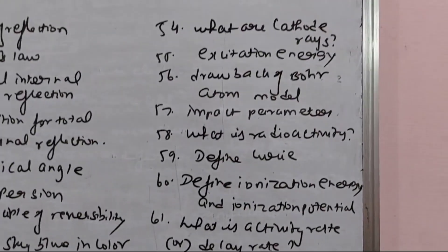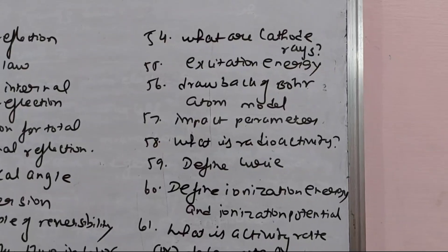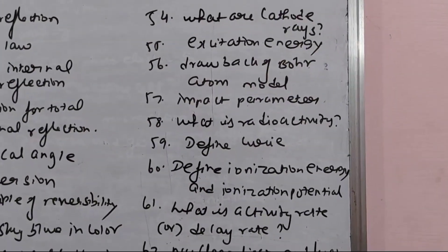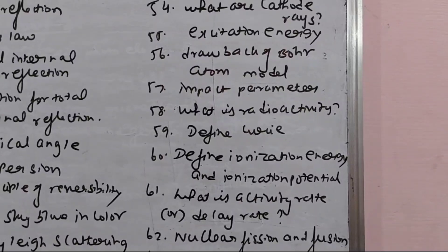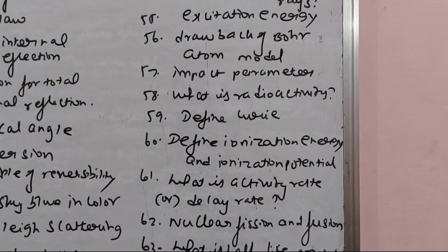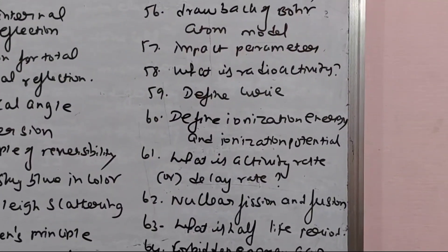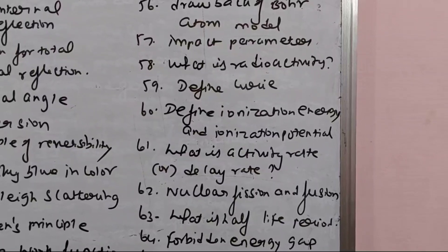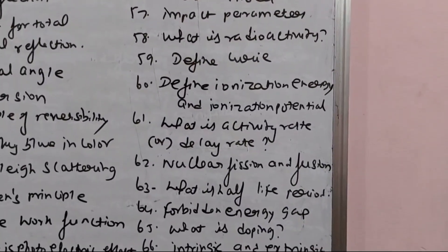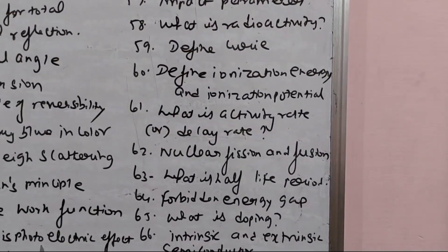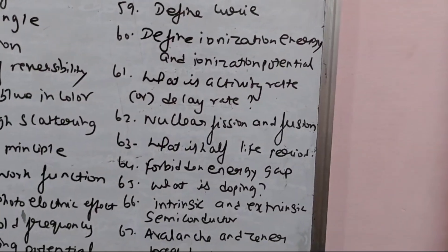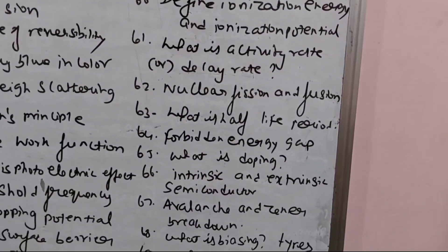9th lesson: Cathode ray, what is ionization energy, drawback of Bohr atom model, impact parameter, what is radioactivity, define curie, define ionization energy and ionization potential, what is activity and decay rate, what is nuclear fusion and fission, what is half-life period, mean life. This is the 9th lesson — easy.